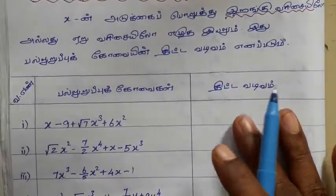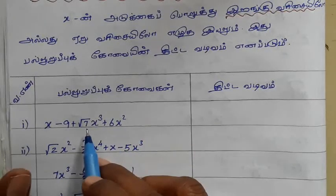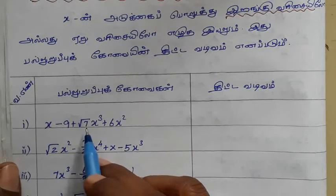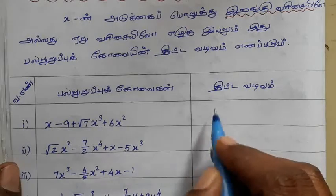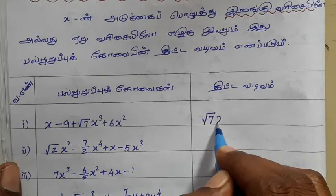Now here, first we have to write the power of root 7 times x power 3.